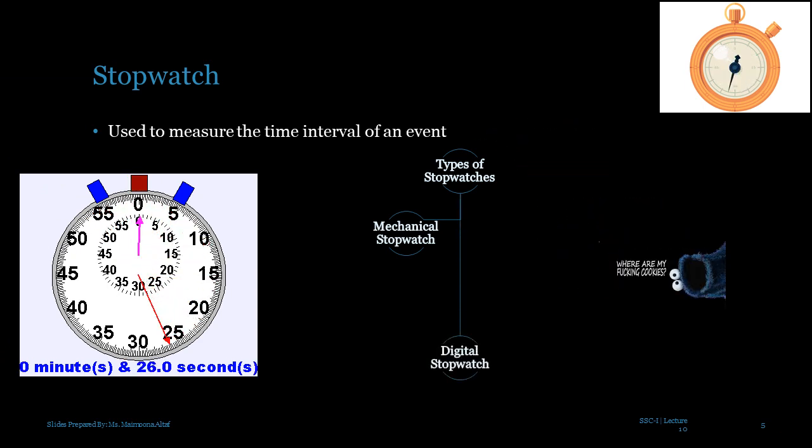A mechanical stopwatch can measure a time interval up to a minimum of 0.1 second, and a digital stopwatch, which is commonly used in the laboratories, can measure a time interval as small as 0.01 second.